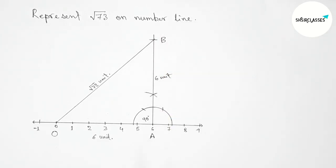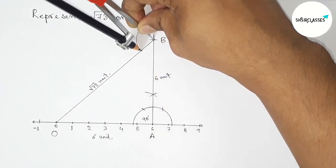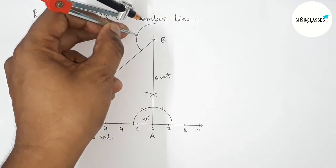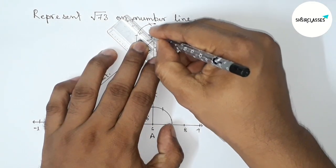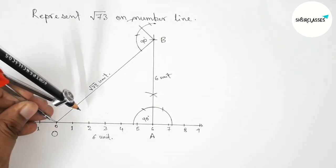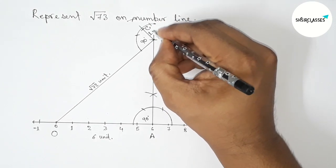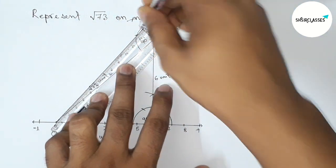Now we have to represent root 73, so we construct a 90 degree angle at point B. Taking one unit length — from zero to one, this is one unit length — putting the compass on point B and cutting to mark point C. So BC is one unit length.